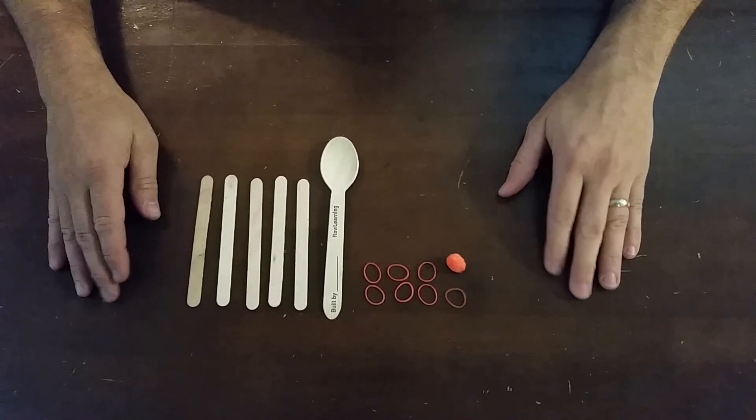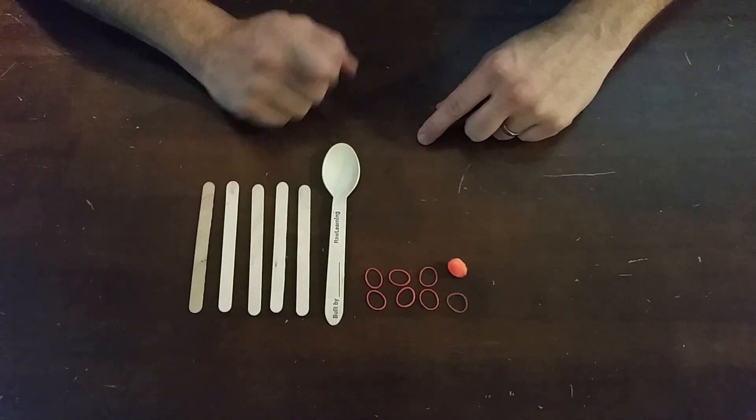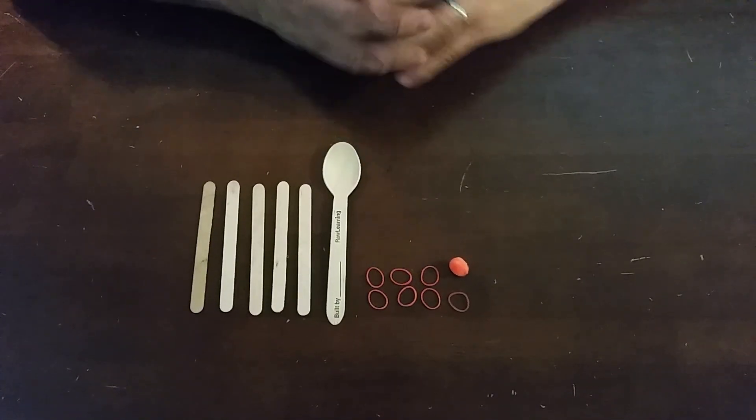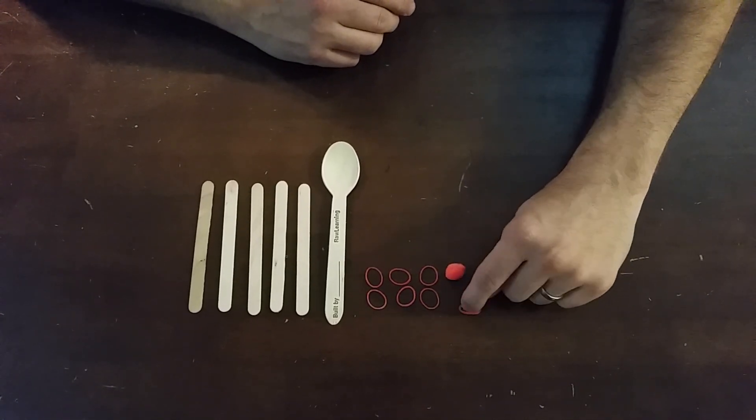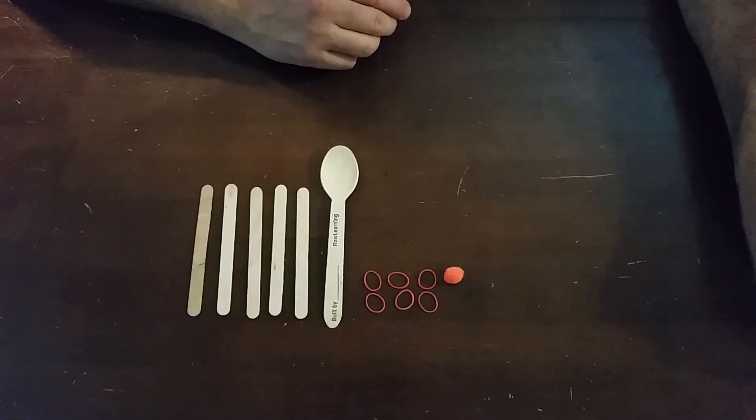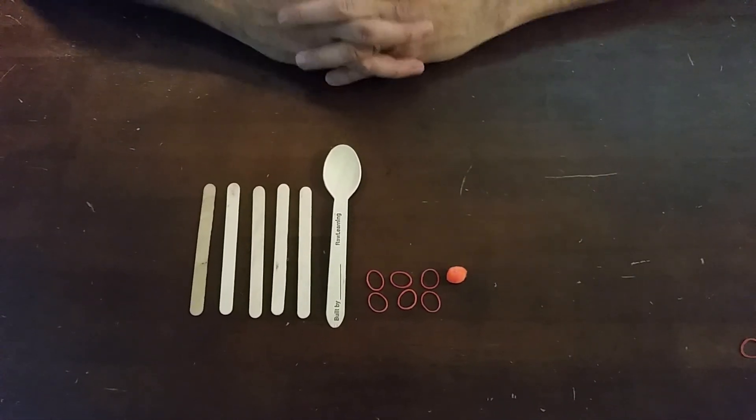The key components for making the catapult are five popsicle sticks, one spoon, six rubber bands, and some ammo. We've included an extra rubber band in the kit just in case one broke, so I'm going to put that aside since it's not really needed unless we have a problem.